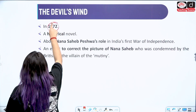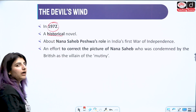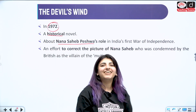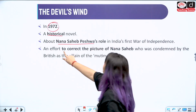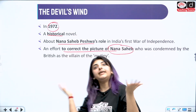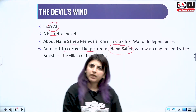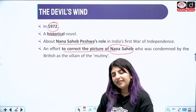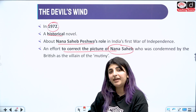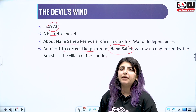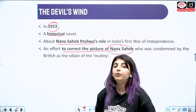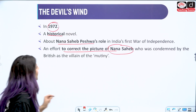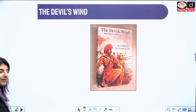Then we have The Devil's Wind, published in 1972. It is a historical novel about Nana Sahib Peshwa's role in India's first war of independence in 1857. It is an effort to correct the picture of Nana Sahib, because the Britishers had painted him as a monster and a villain. So Manohar Malgaonkar wrote The Devil's Wind to show the positive side of Nana Sahib Peshwa and remove that stigma from his image.